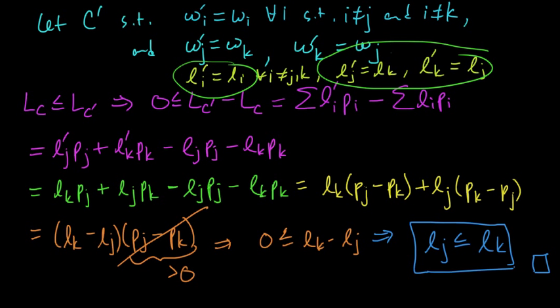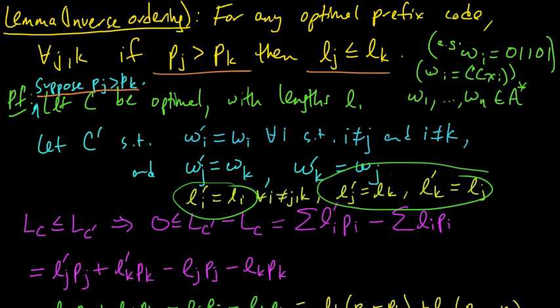So that is the proof of the inverse ordering lemma. And it was pretty simple. We just made it very formal. But it's just stating this very clear fact that if you have a more probable source symbol, then it's going to have to have its codeword which is less than or equal to the other guy, since otherwise you could just swap them and get a better code.